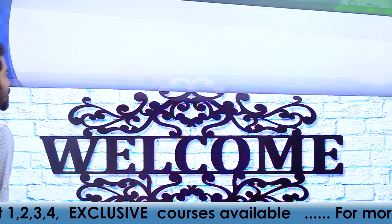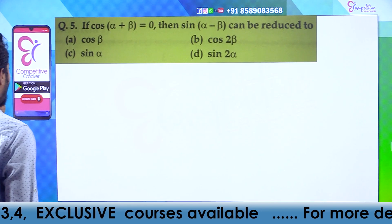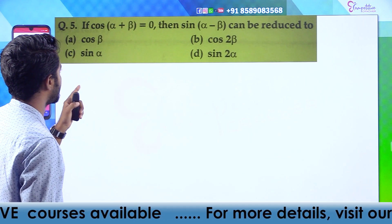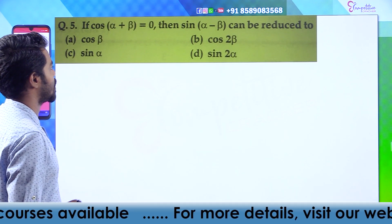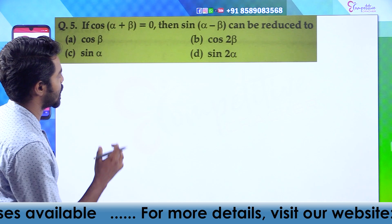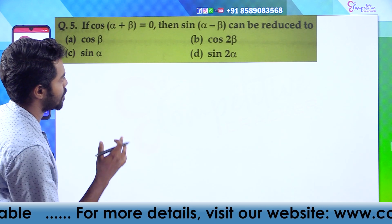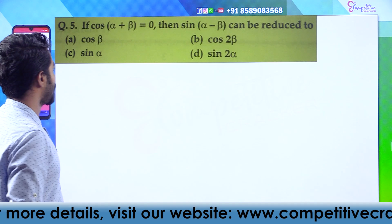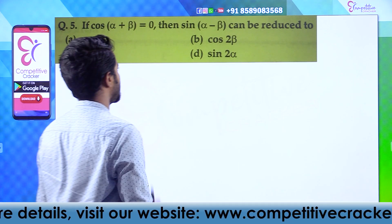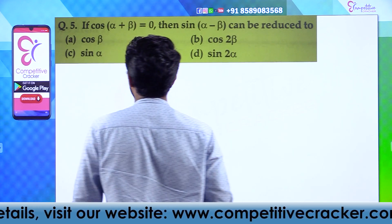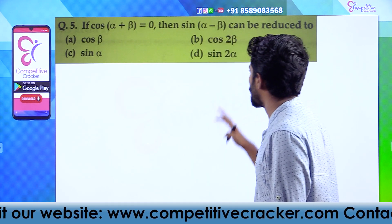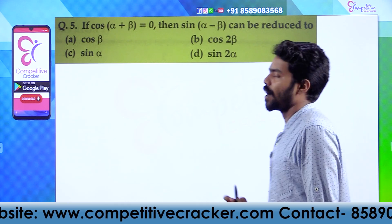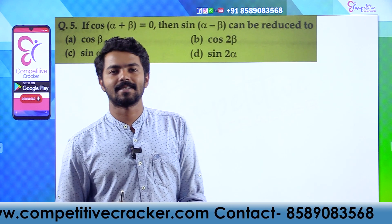First question: if cos(α + β) equals 0, then sin(α - β) can be reduced to dash. Option A: cos β. Option B: cos 2β. Option C: sin α. Option D: sin 2α. The answer is Option A.